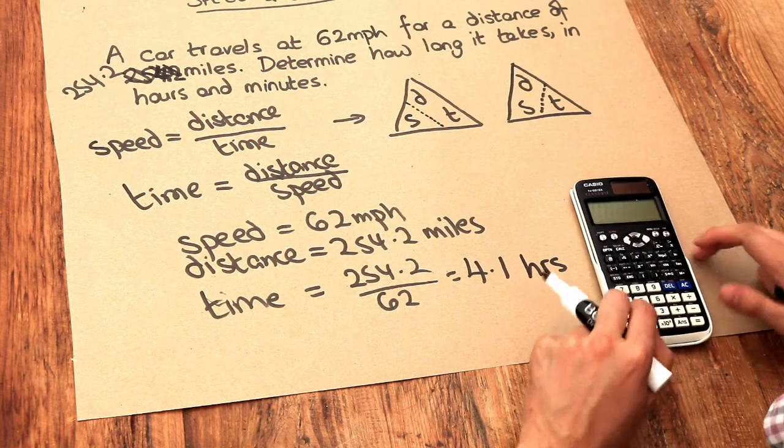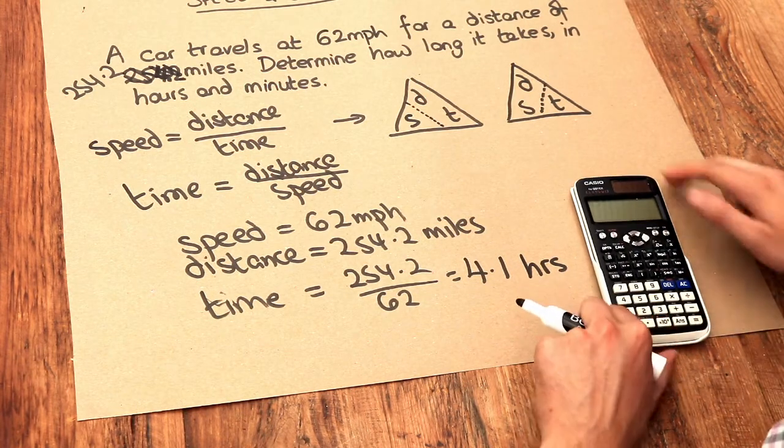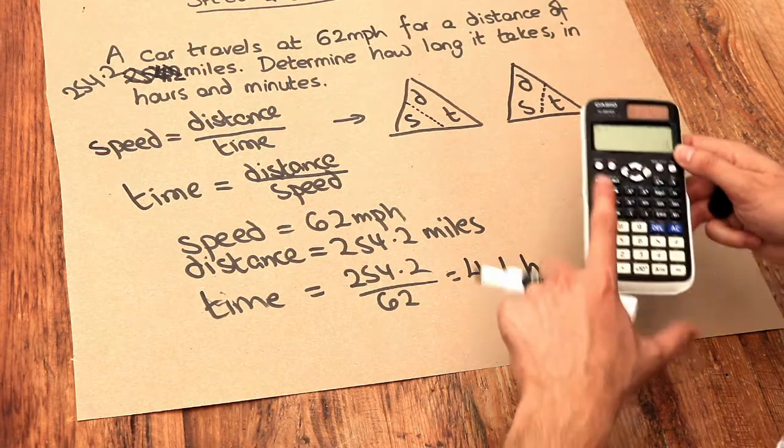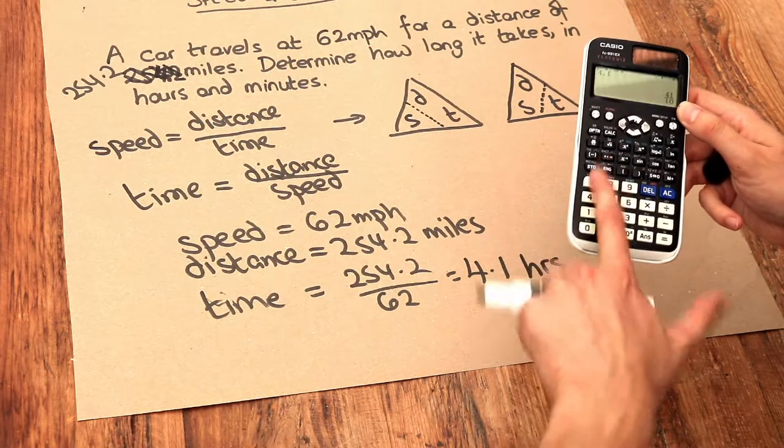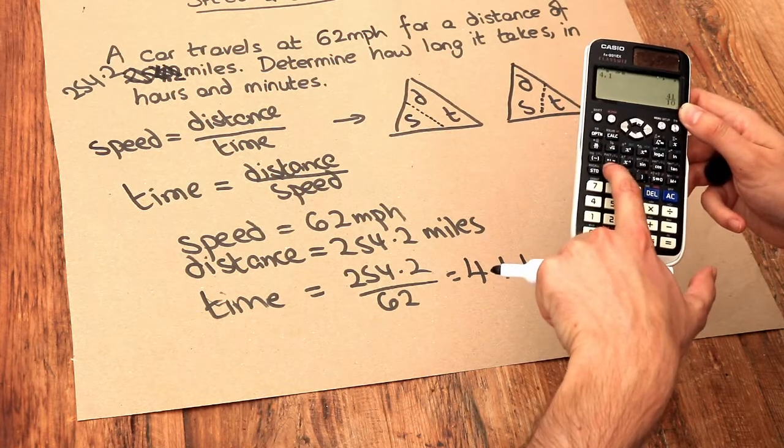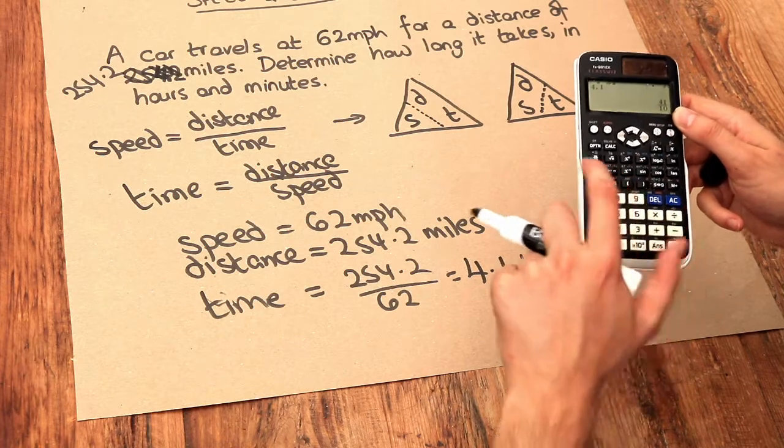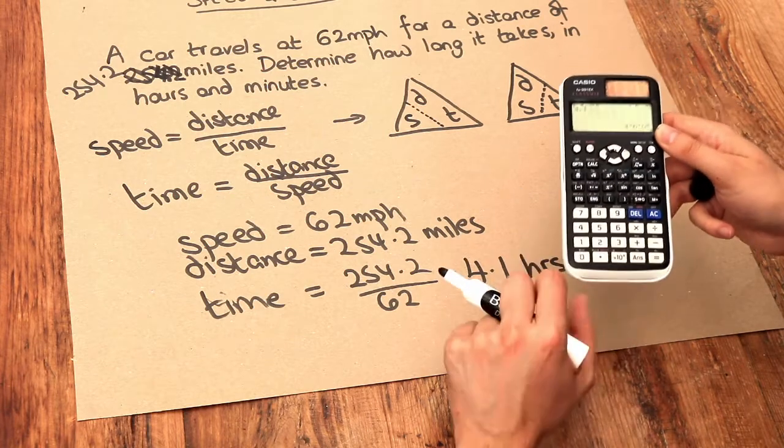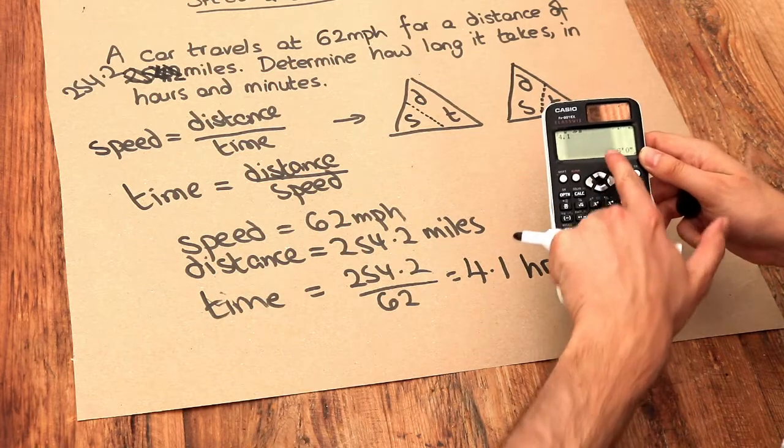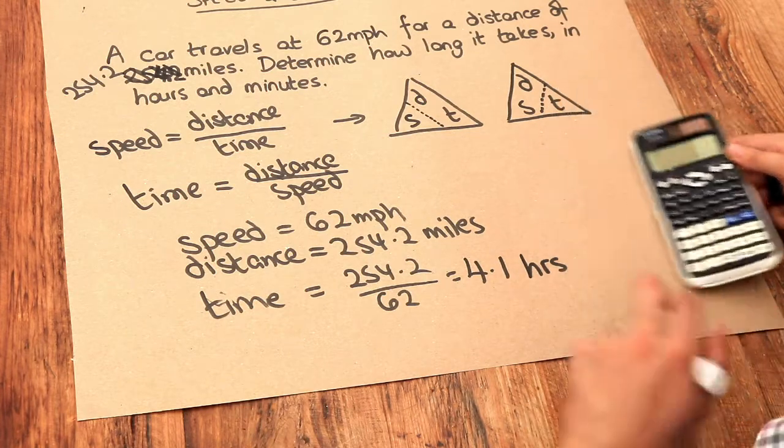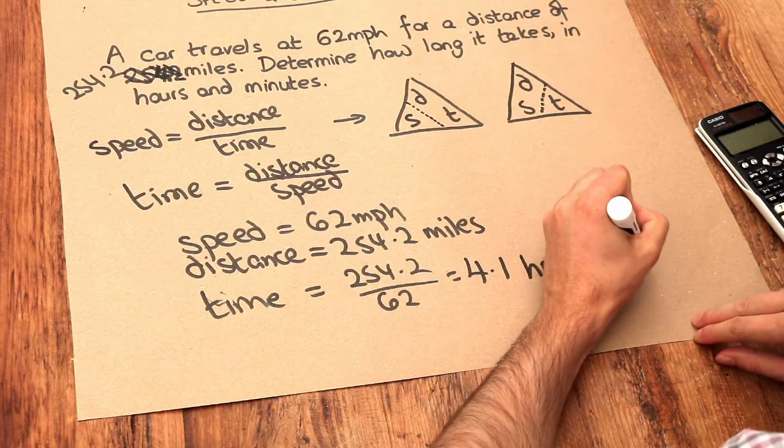One way is to actually use a special key on the calculator. So if you've got your 4.1, if you press this key here—it's got like a sort of degree symbol and some apostrophes and stuff—if you press that, it actually converts it for you to 4 hours and 6 minutes. So this is 4 hours and 6 minutes.